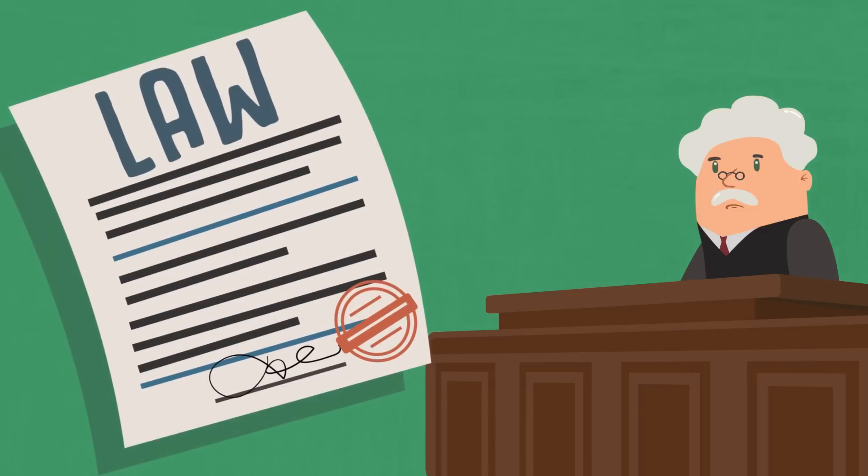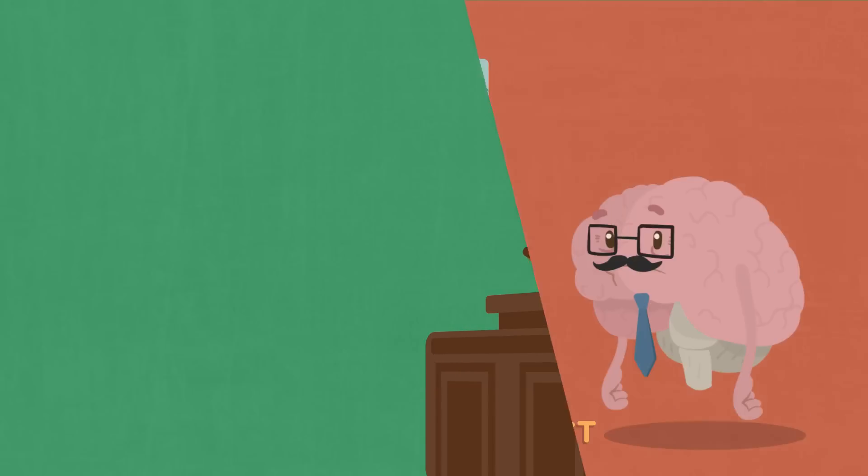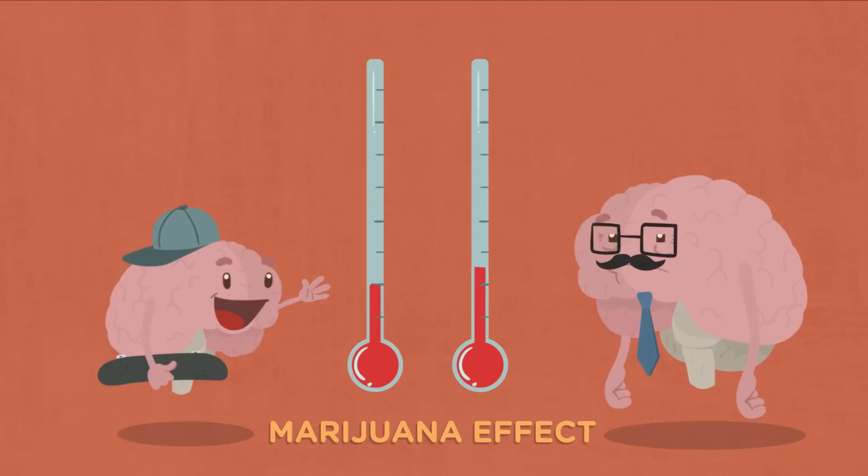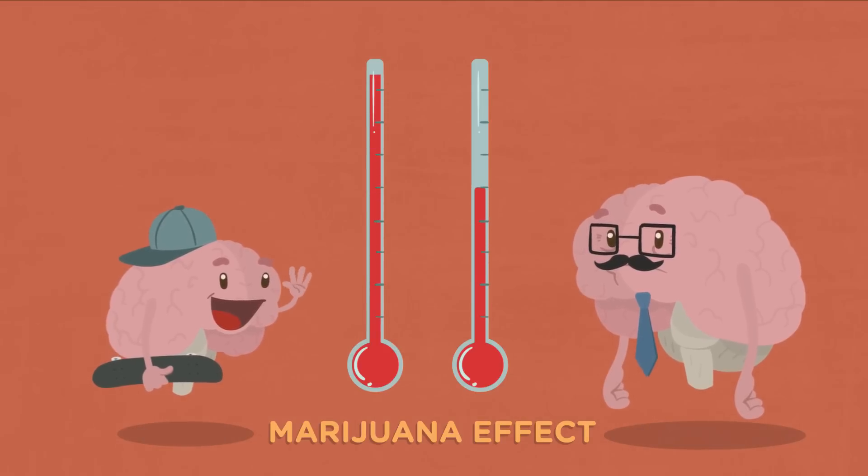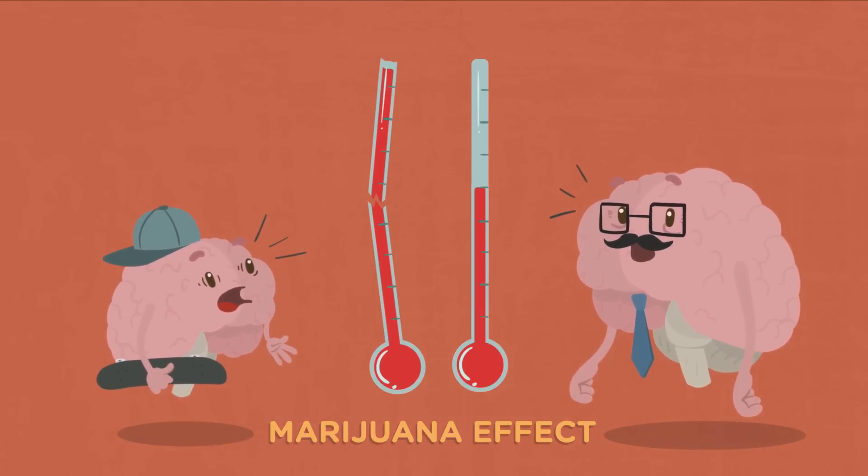Laws allowing medical and recreational use of marijuana for adults are becoming more common in some states, though not in others. But as a young person with a still developing brain, marijuana can have a stronger, more harmful effect on you than adults.